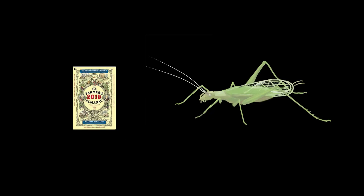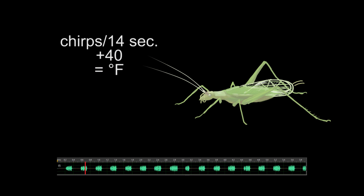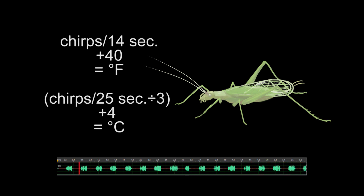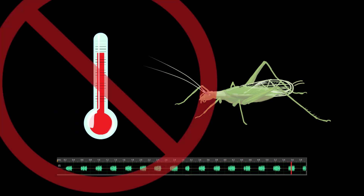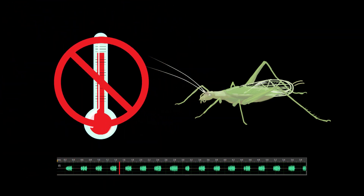You might have read about it in the old farmer's almanac, somewhere on the internet, or maybe just from hearsay. It goes something like this: you count cricket chirps for 14 seconds, and then add 40, and you get the temperature in Fahrenheit. There's also a formula for Celsius. Technically this is true, but there are a number of reasons why you won't be using the cricket outside your window as a thermometer.